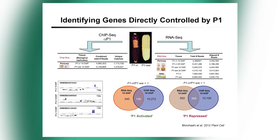We took advantage of isogenic lines that expressed or did not express P1, combined ChIP-seq with antibodies against the P1 protein, and RNA-seq comparing contrasting lines to identify all target genes P1 controls. This is a TF-centered approach to identifying a portion of the gene regulatory network. The overlap between ChIP-seq and RNA-seq is usually modest — a few percent — because RNA-seq identifies both direct and indirect targets while ChIP-seq gives only direct targets. Not surprisingly, many genes directly controlled by P1 were involved in flavonoid biosynthesis.